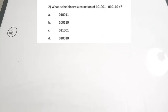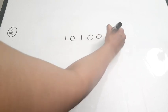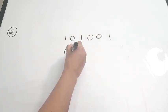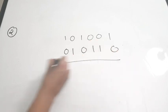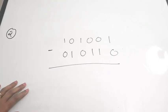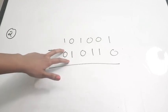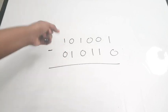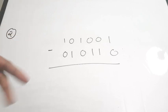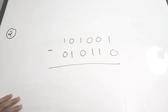The second question: what is the binary subtraction of 101001 minus 010110? To subtract these two binary numbers, take the two's complement of the second number and add it to the first. Alternatively, you can perform direct binary subtraction using the rules: 1−0=1, 0−1=1 with borrow, 0−0=0, and 1−1=0.